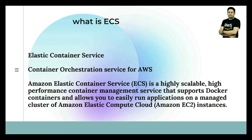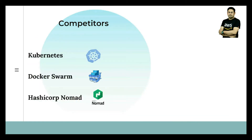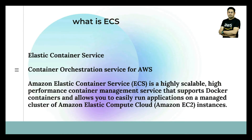We have other tools in the market that are competitors, like Kubernetes, Docker Swarm, and HashiCorp Nomad — those are popular tools competing with ECS. In layman's terms, ECS is a service where we can deploy our containerized application on an EC2 machine. It's a kind of cluster — we can create a cluster and with the help of that cluster we can deploy our containerized services on the EC2 machine.